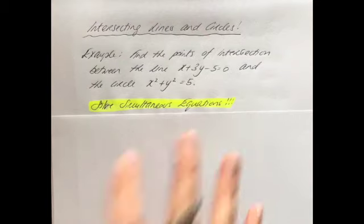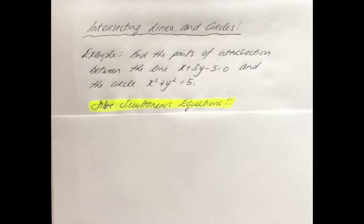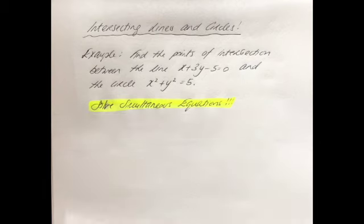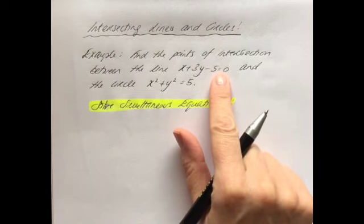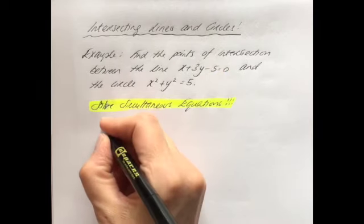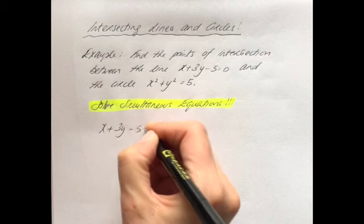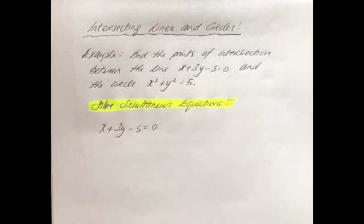There's a whole other video in the algebra section on simultaneous equations when one is linear and one is nonlinear, which goes through in great detail all the steps you need to take. I'm going to go through it here, but that is a more thorough video if you're finding this process tricky. So with the substitution method, your first step is to take the simpler of the two equations — in other words, the linear — and get x equals or y equals, whichever is easier.